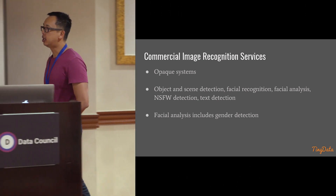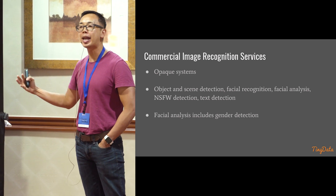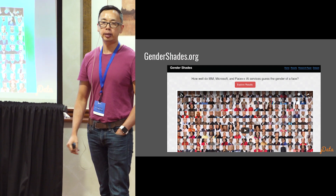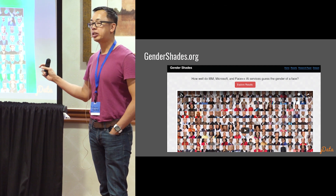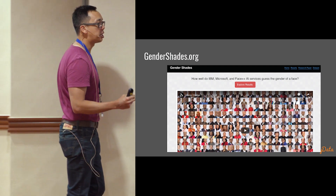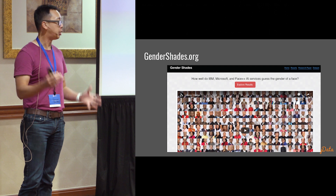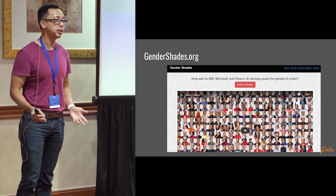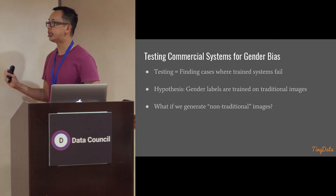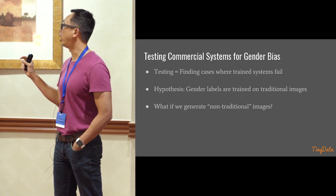One of the features of facial analysis is gender detection. Given a picture, the service finds the face and figures out what it can about that face, including gender. There's a research project called Gender Shades that has highlighted the challenges these systems have classifying genders for people of color. Very specifically, for women of color, there's a much higher chance of being misgendered than for a white woman. If you're a woman of color using a system from IBM or AWS, there's a higher chance you're classified as a man.